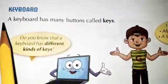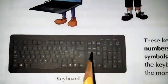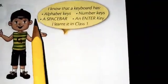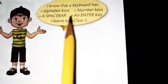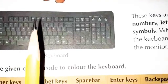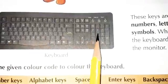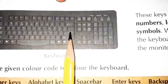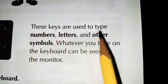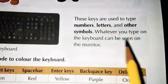On page number 13, there is the keyboard. A keyboard has many buttons called keys. A keyboard has alphabet keys, number keys, a space bar, and an enter key — we learned this in class one. Today I am going to tell you about four types of keys: alphabetic keys, number keys, the space bar, and the enter key. These keys are used to type numbers, letters, and other symbols.